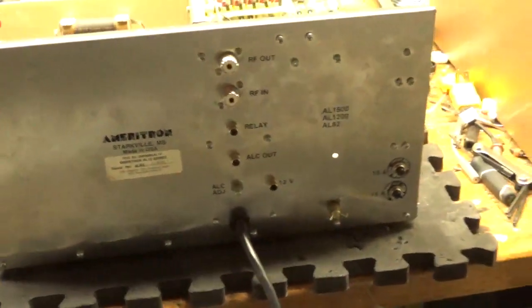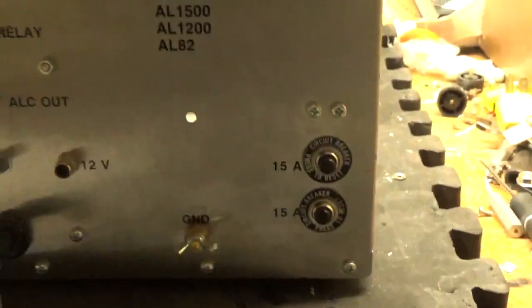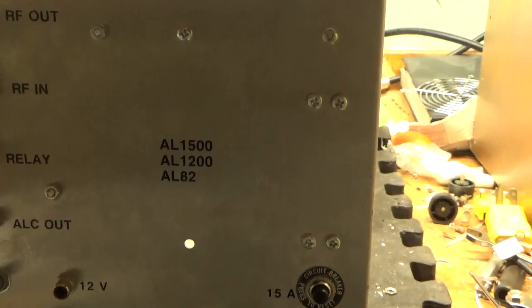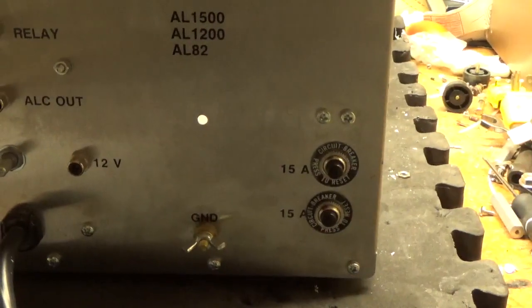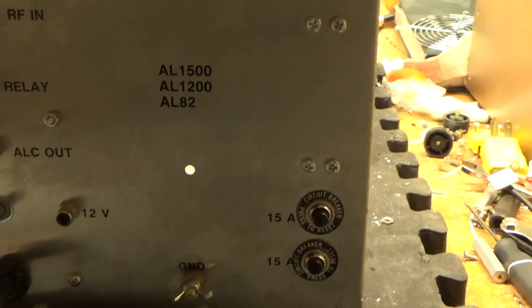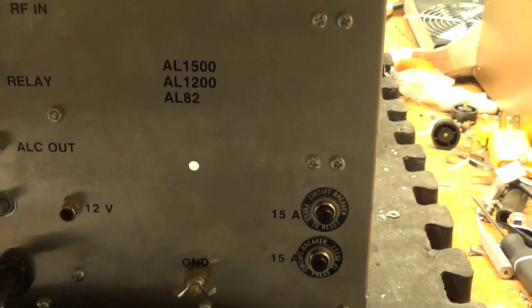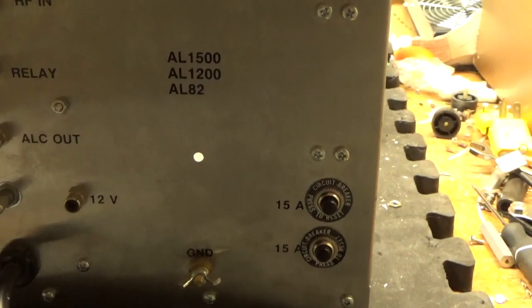I noticed right away that it has two circuit breakers in place of the stock fuses. Obviously, a circuit breaker takes longer to interrupt the fault than a fuse, a regular fuse. Not a slow blow. A slow blow takes longer than a regular fuse.